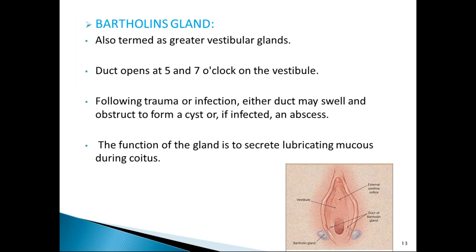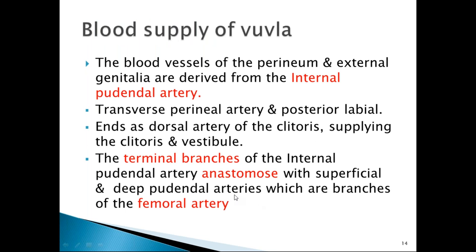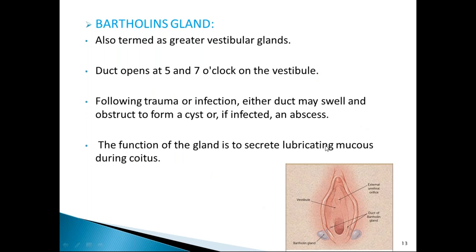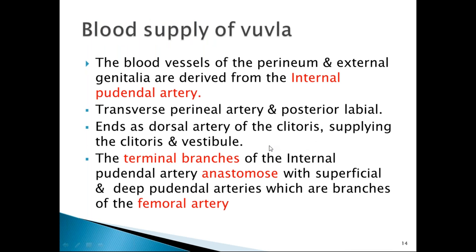Bartholin glands are also called greater vestibular glands. They are present at the five o'clock and seven o'clock positions, and their ducts open into the vestibule. If the ducts get obstructed, the glands dilate and form a cystic swelling, leading to Bartholin cyst and Bartholin abscess, which has to be drained. Their main function is to secrete lubricating material required for coitus.